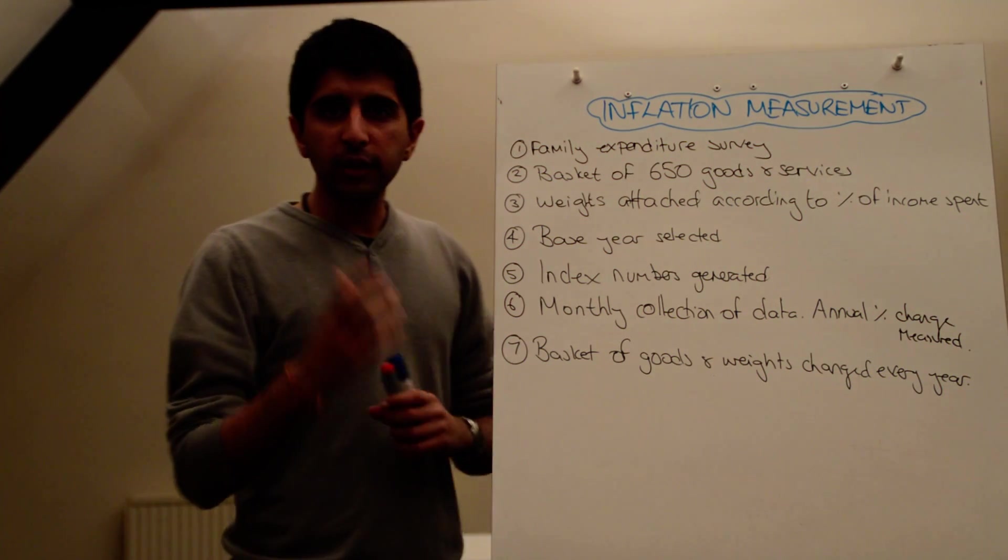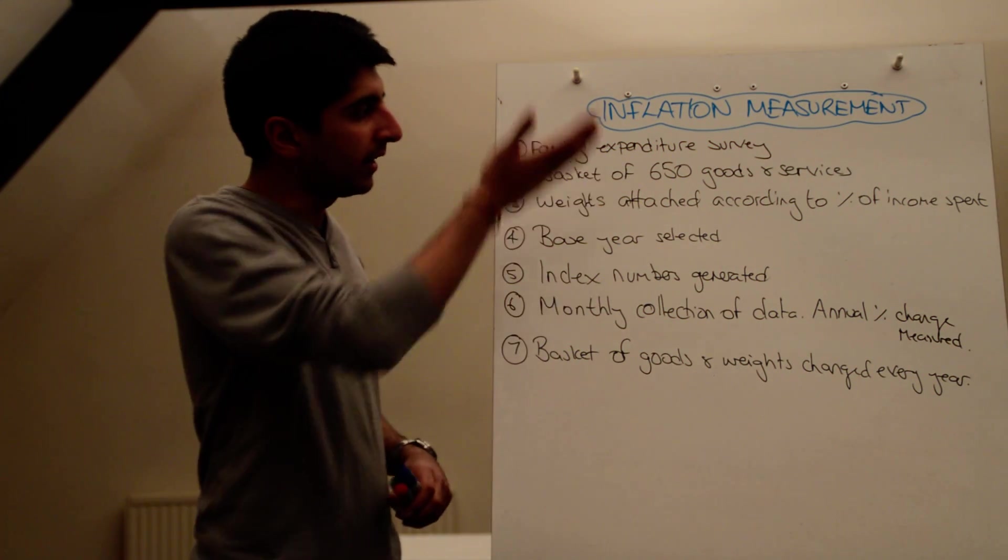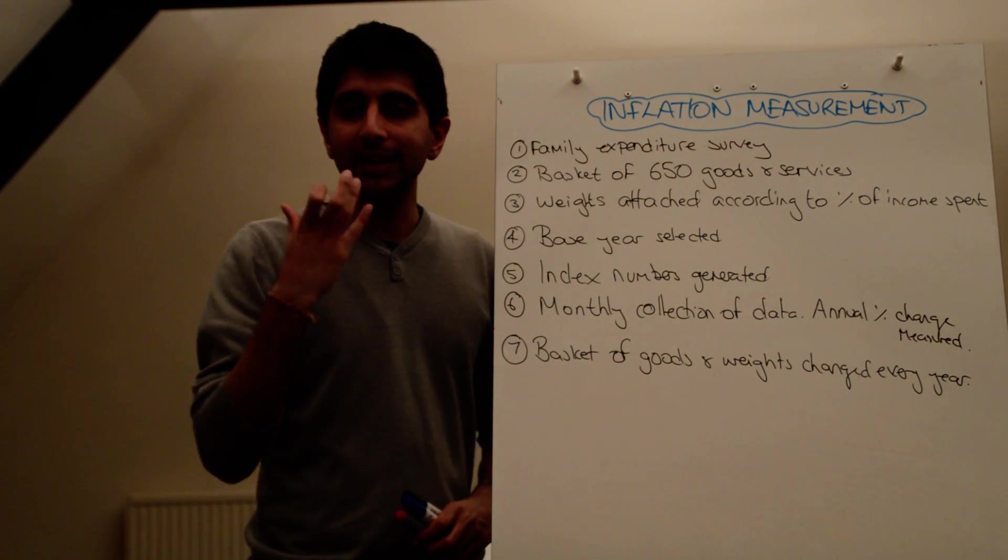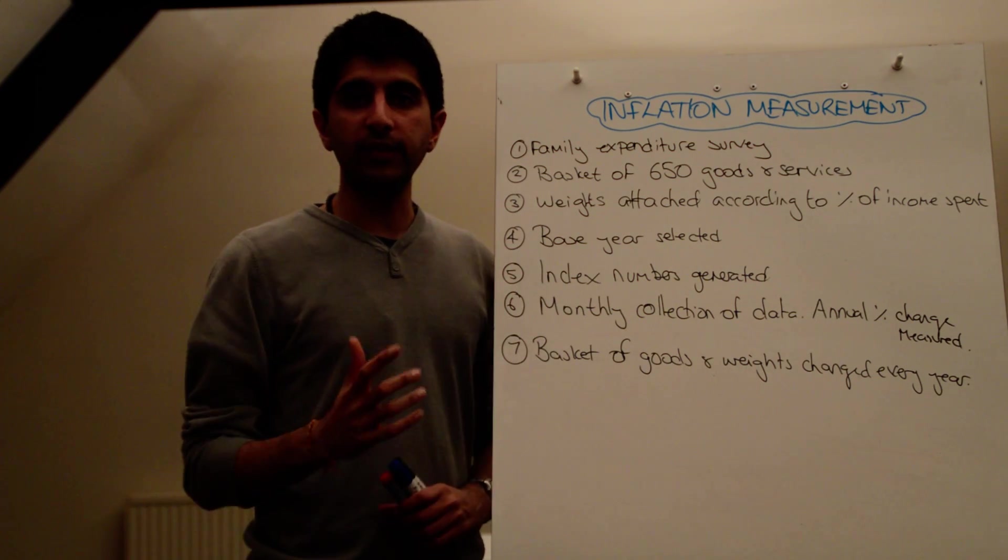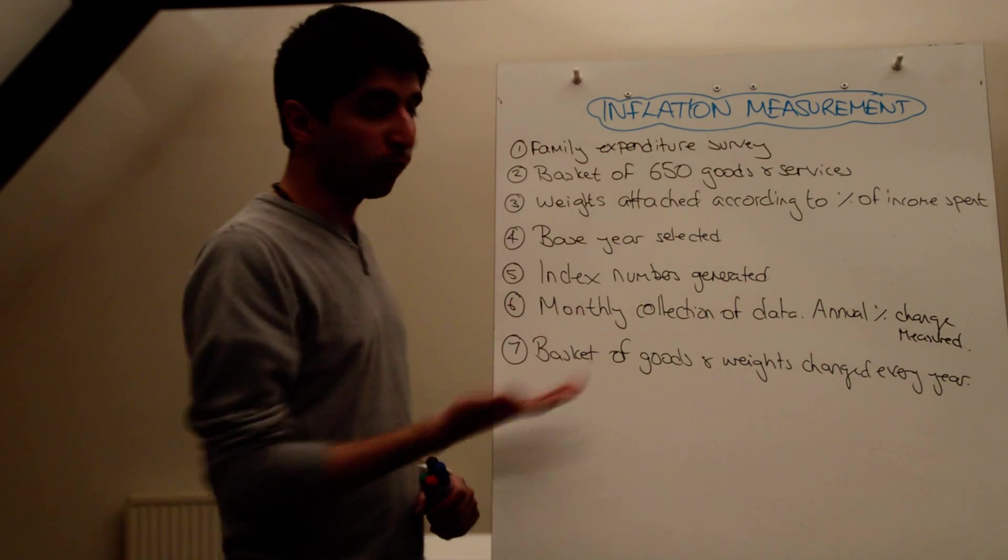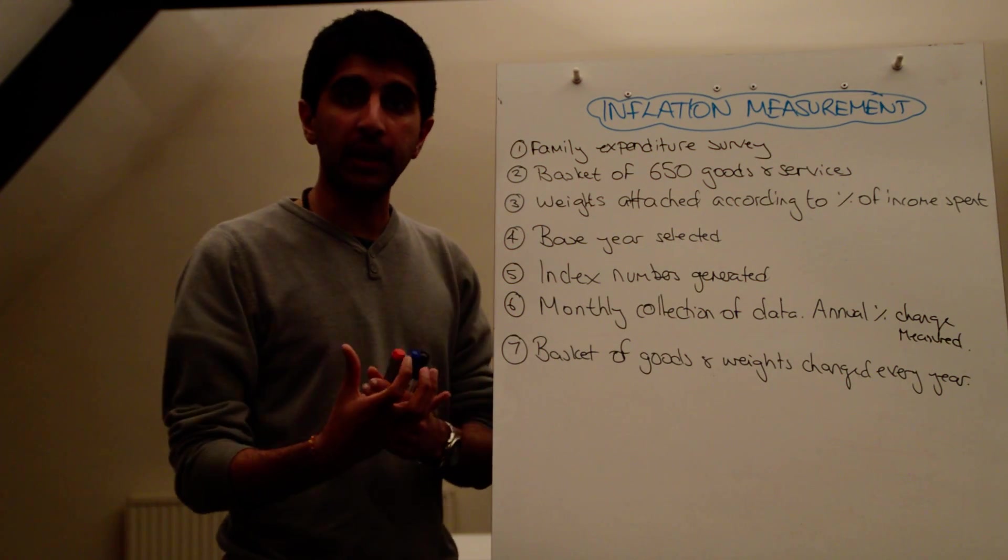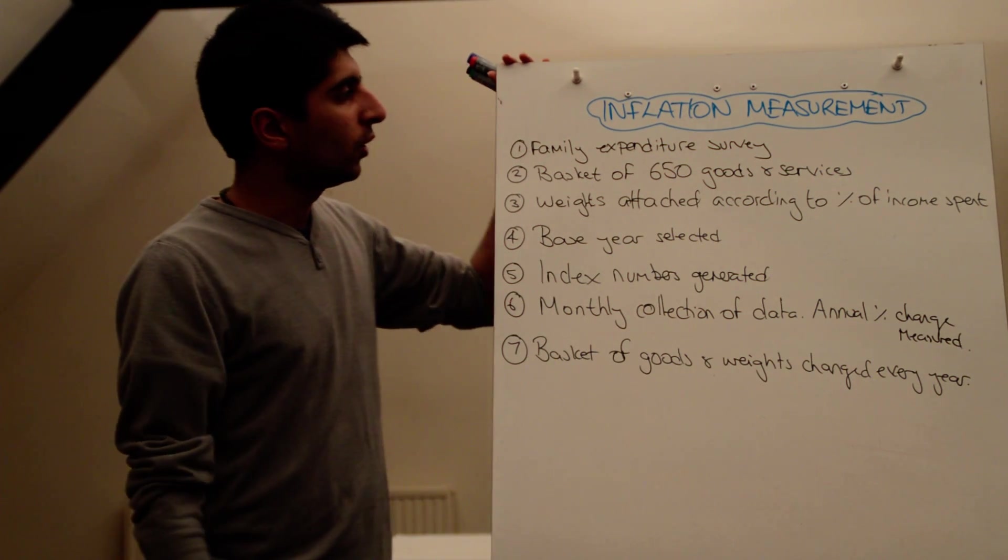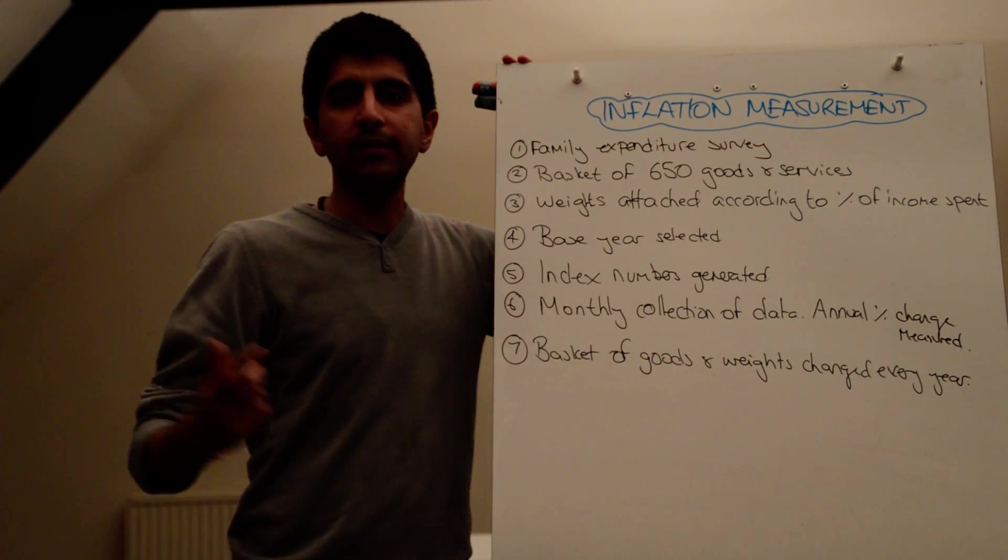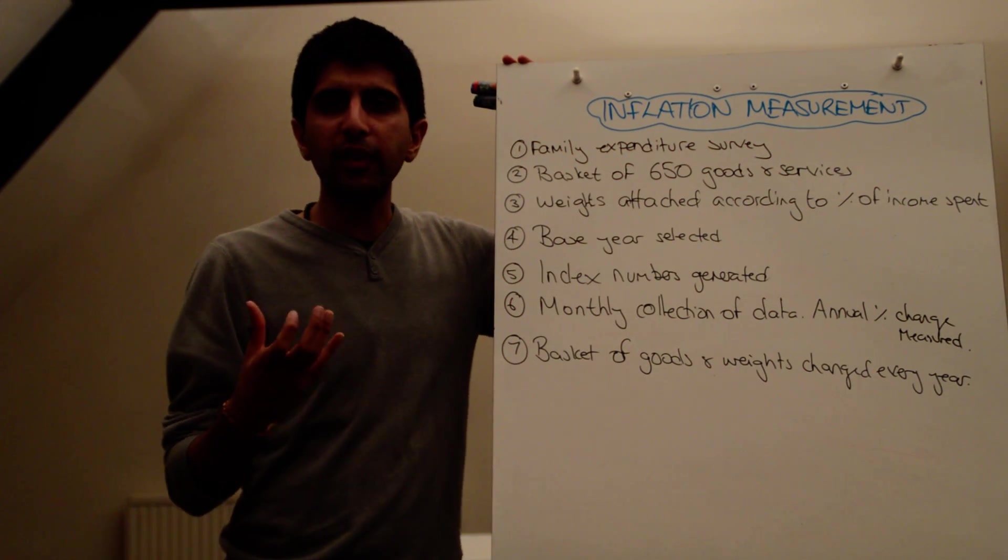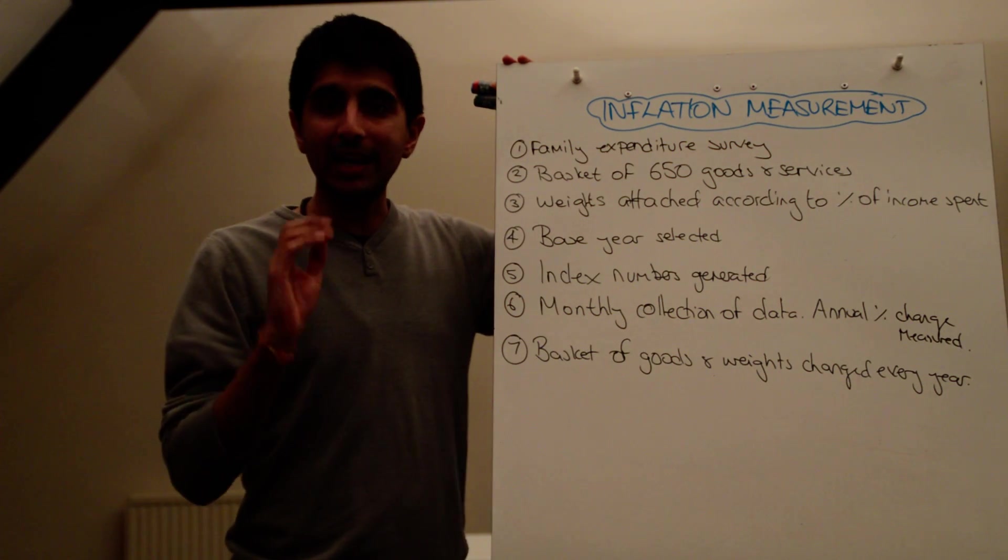Right, CPI, Consumer Price Index, is an index, and it's calculated in these key steps. So this is the UK. Make sure you understand all of these steps, from one right down through to seven, and then you can explain it if it came up in the exam. So how's it done? Well, first of all, a family expenditure survey is sent to about 10,000 different households in the UK.